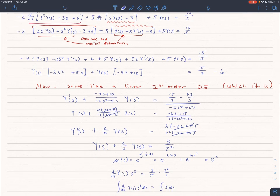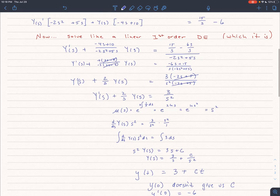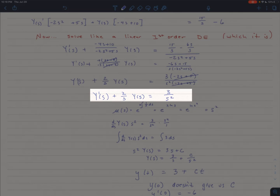And then we will, there's a lot of nice simplification here, and we get it down to a pretty simple differential equation. y prime plus 2 over s y equals 3 over s squared.